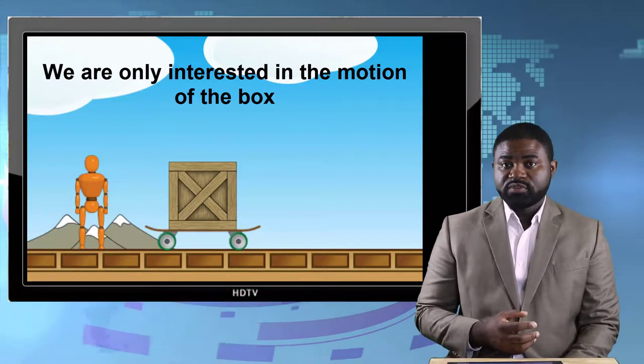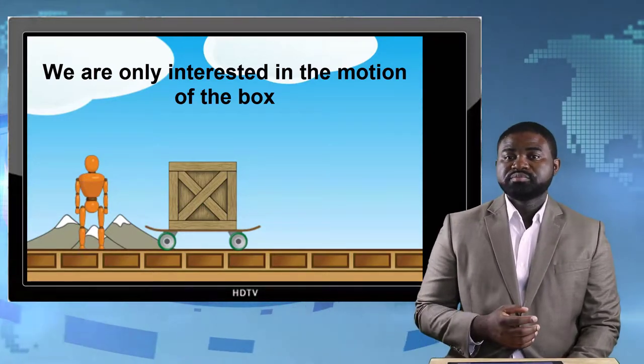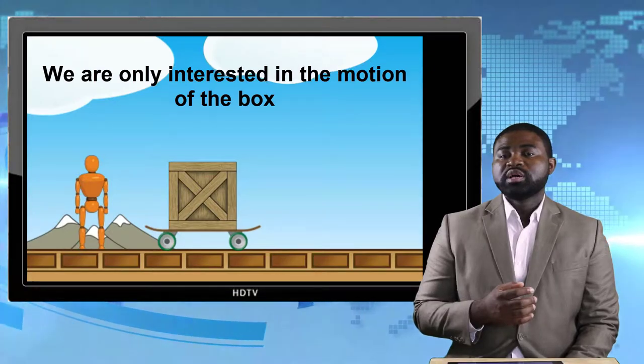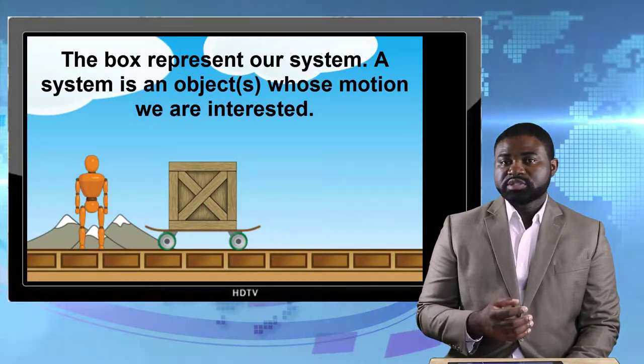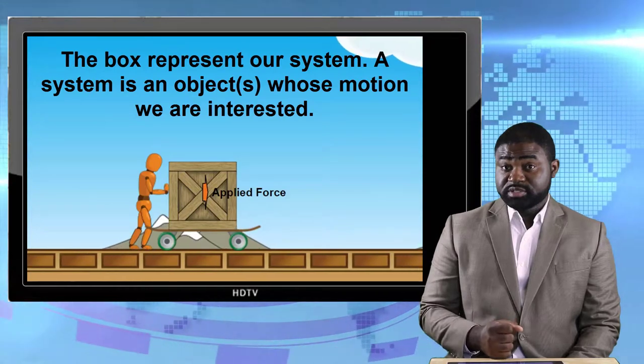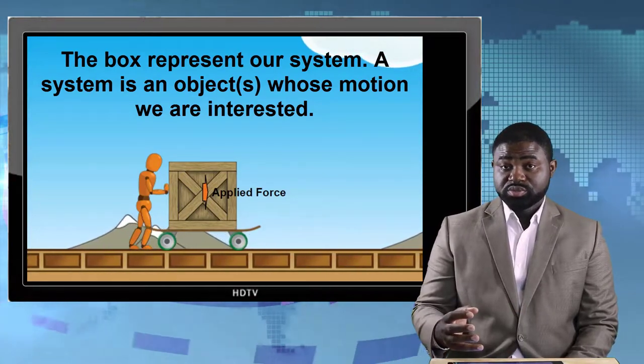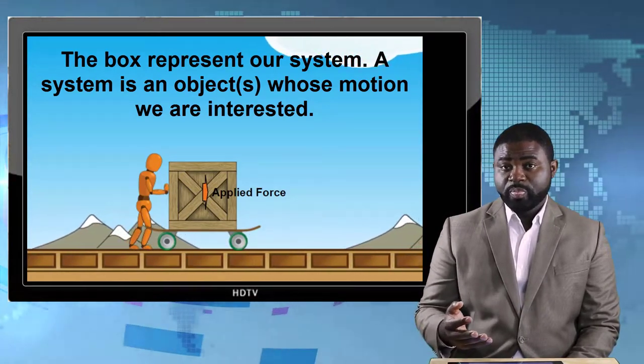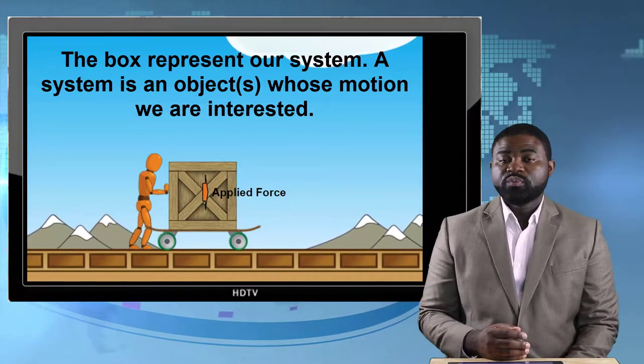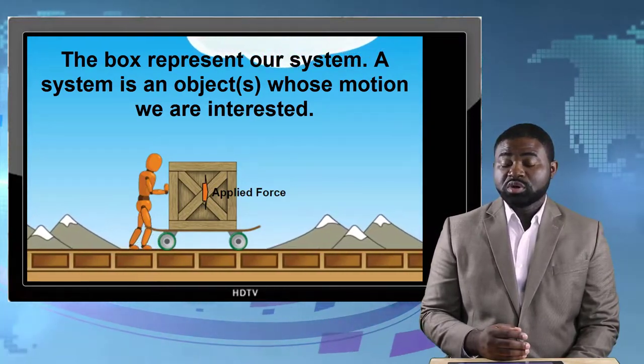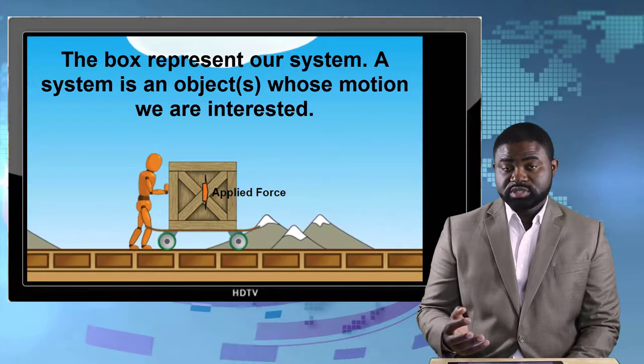So in mechanics, a system is basically the object or group of objects whose motion we are interested in. For example, if we are interested in the motion of a box, then the box is our system.